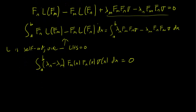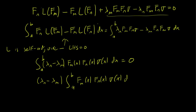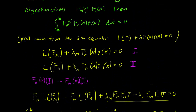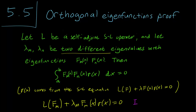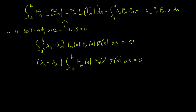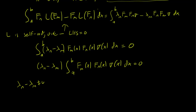Since the lambdas don't depend on x, we can pull them out: (lambda_n minus lambda_m) times the integral from a to b of F_m(x) * F_n(x) * sigma(x) dx equals 0. Since lambda_n and lambda_m are two different eigenvalues, they are not the same, so lambda_n minus lambda_m is not 0. Therefore we can divide by it, and this implies that the integral of F_m * F_n * sigma must be 0. And we are done.